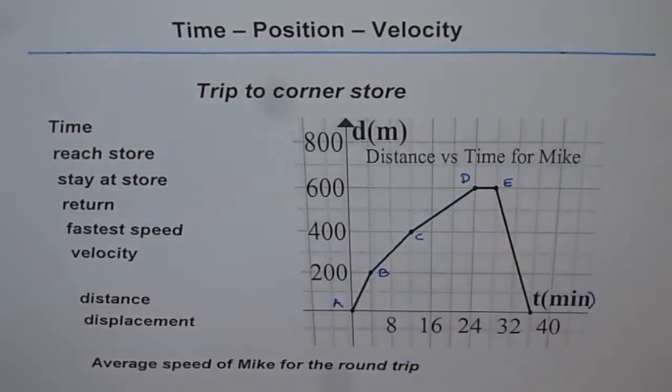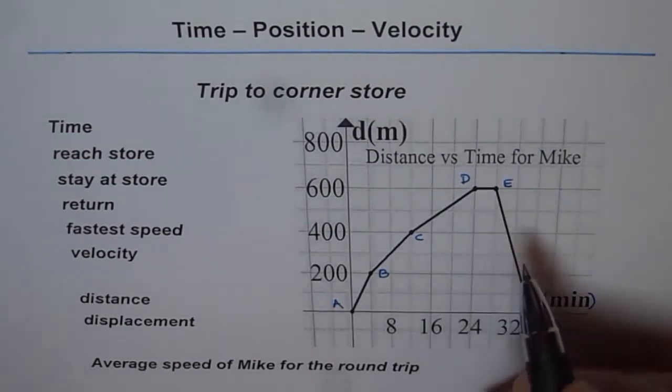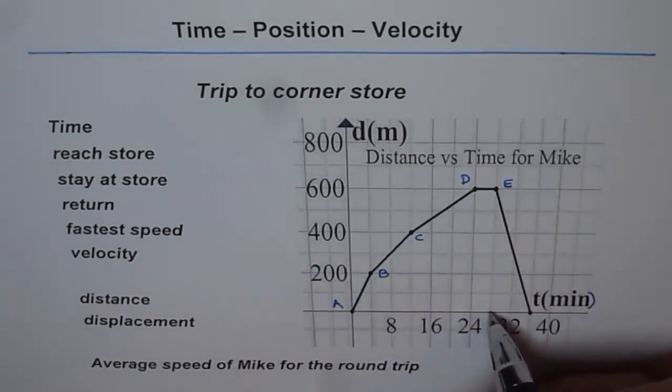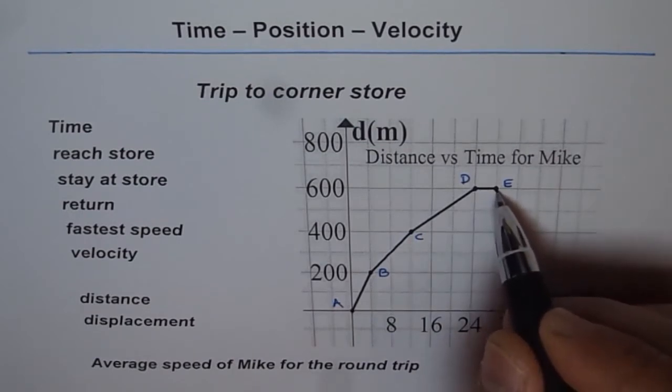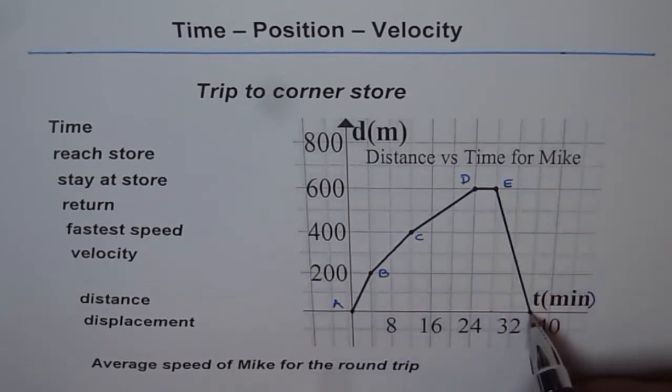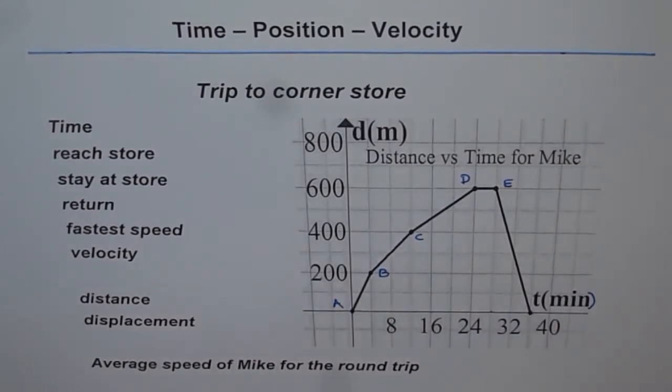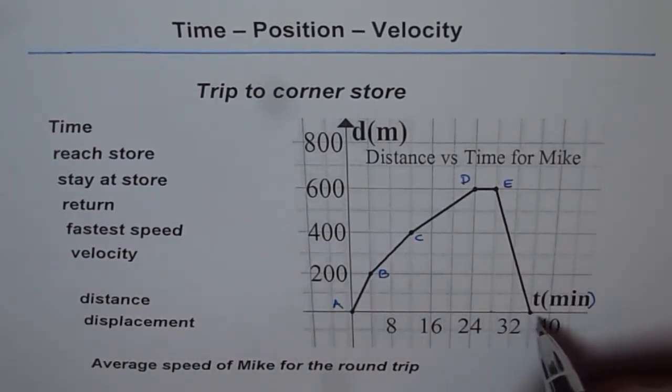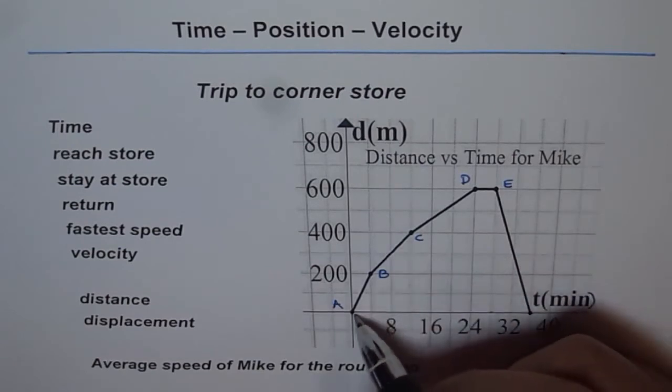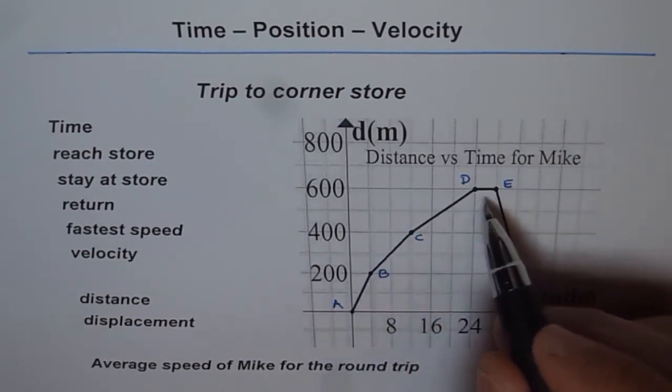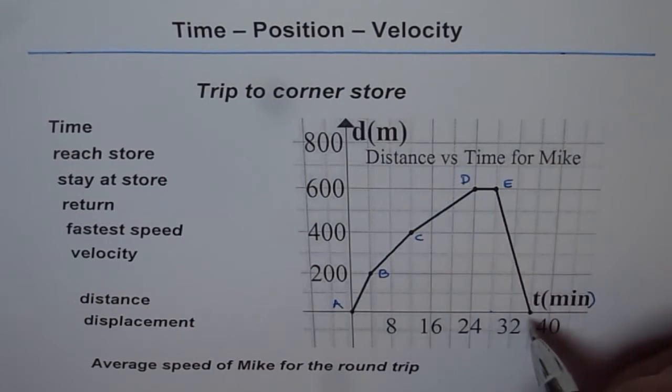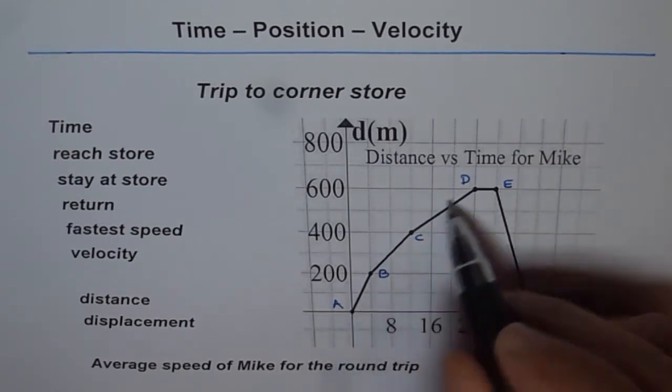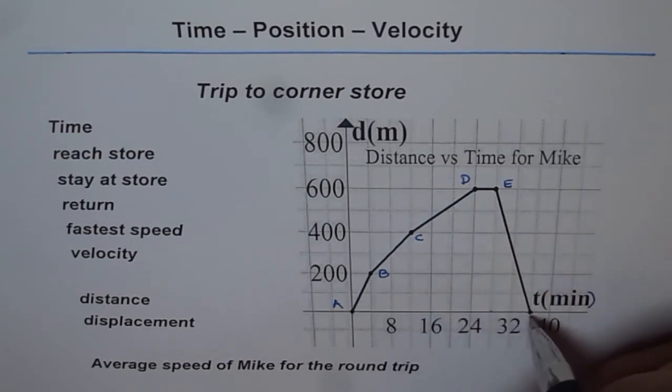At D Mike stops for a while, for 4 minutes, and then returns back to 0, to the starting point. An interesting thing here is that in earlier graphs the distance was always increasing. Here we see the distance decreases, going from home and then coming back to the starting point, coming back to home.